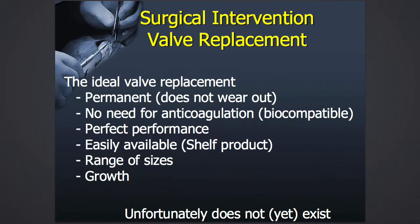Sometimes the valve is not repairable and then we need to replace it. What would be the ideal valve replacement? Ideally we only want to do one operation, so we would like a permanent valve replacement that is biocompatible — it doesn't offset the blood system and there is no need for anticoagulation. We obviously want this valve to work perfectly with no narrowing and no leakage, to be easily available in a range of sizes, and ideally we want these valves to grow. Unfortunately, that valve does not yet exist. There is a lot of research going on, but the valve isn't there yet.